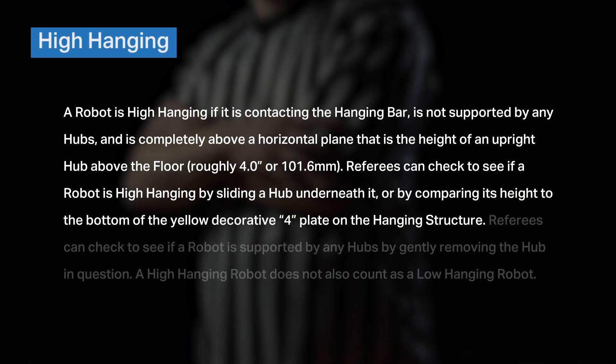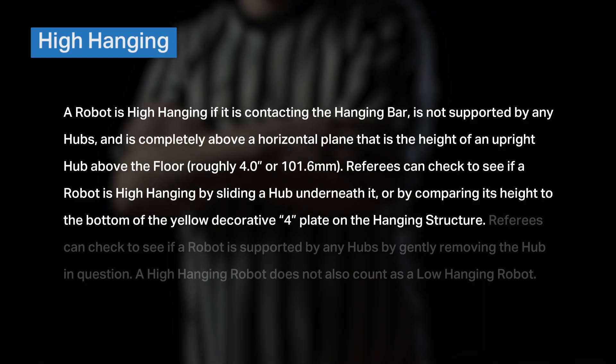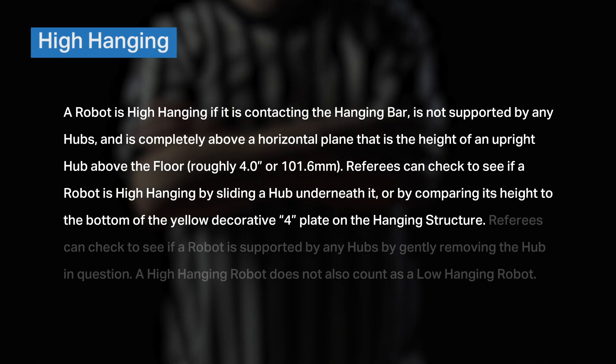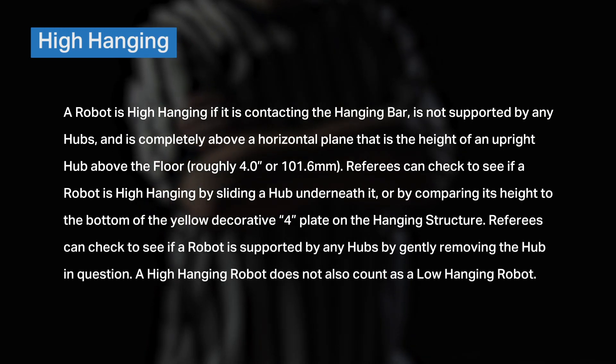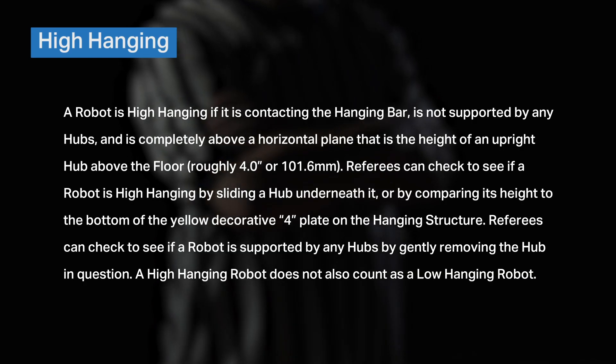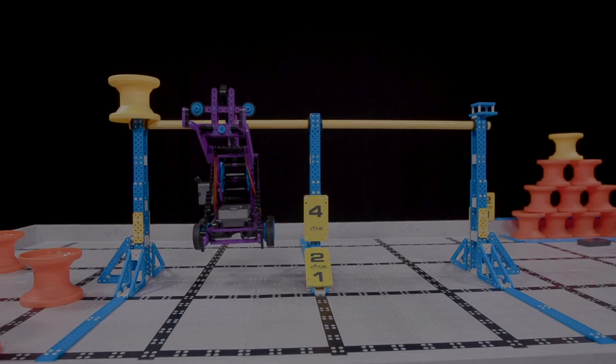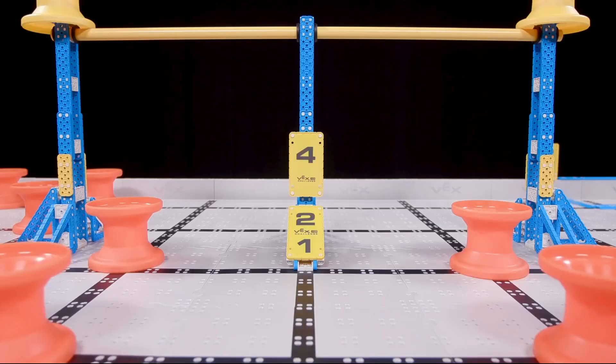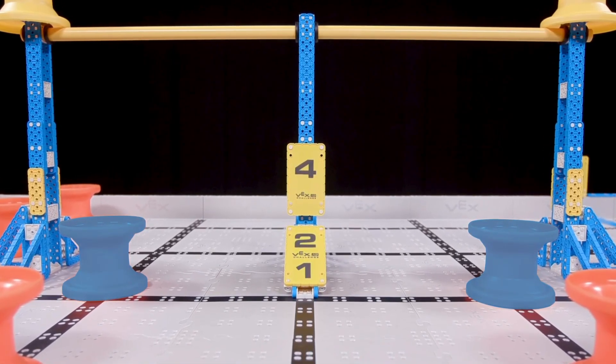For high-hanging, a robot is high-hanging if it is contacting the hanging bar, is not supported by any hubs, and is completely above the horizontal plane that is the height of an upright hub above the floor, roughly 4 inches or 101.6 millimeters. Referees can check to see if a robot is high-hanging by sliding a hub underneath it or by comparing its height to the bottom of the yellow decorative floor plate on the hanging structure. Referees can check to see if a robot is supported by any hubs by gently removing the hub in question. A high-hanging robot does not also count as a low-hanging robot. As mentioned in the rule, there are a few different ways that a referee can check to see if a robot has made it to a high-hang or not. Usually, you should be able to tell visually by looking at the yellow decorative plates, and in close situations, a hub can be used to check for sure.